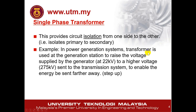In an electrical power generation system, a transformer is used at the generation station to raise the voltage from 22 kV to a higher voltage, which is around 132 kV, 275 kV, or 500 kV. You can refer to chapter 3 on the theory of the three-phase system. Note that the power generation system in Malaysia uses a three-phase system, not a single-phase system. We increase the voltage to reduce the current, allowing power to be sent further away because we reduce power loss due to lower current.